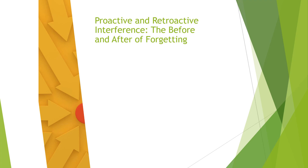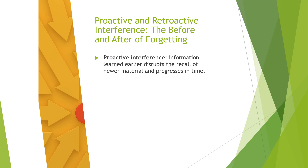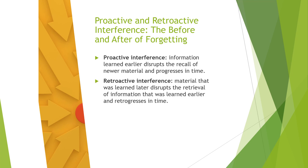Let's look at proactive and retroactive interference — the before and after of forgetting. Proactive interference is when information learned earlier disrupts the recall of newer learned information; you can only remember the older information and can't remember the newer. Retroactive is the opposite: recalling newer material disrupts recalling older material. Proactive progresses forward in time; retroactive works backward.